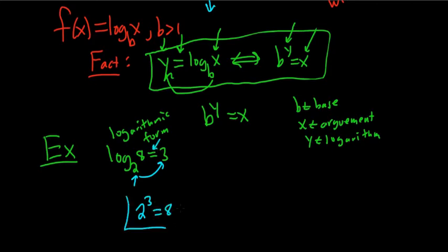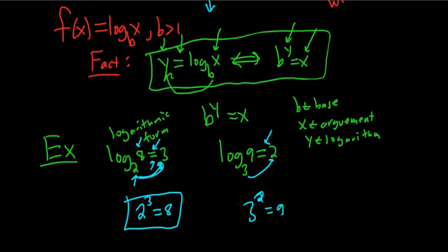So it's 2 to the 3 equals 8. What if instead we had log base 3 of 9 equals 2? And again, this is the logarithmic form. And we want to write it in exponential form. So the base is 3. So it would be 3 to the 2. 3 to the 2 equals 9. So that's how you go from logarithmic to exponential.